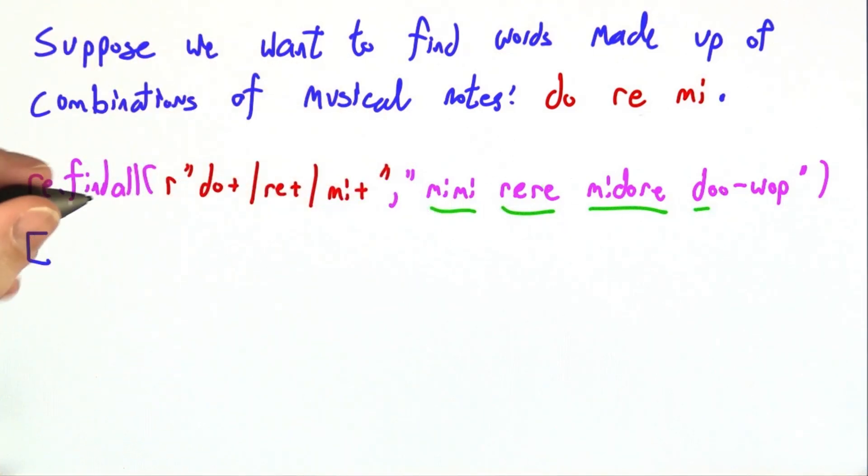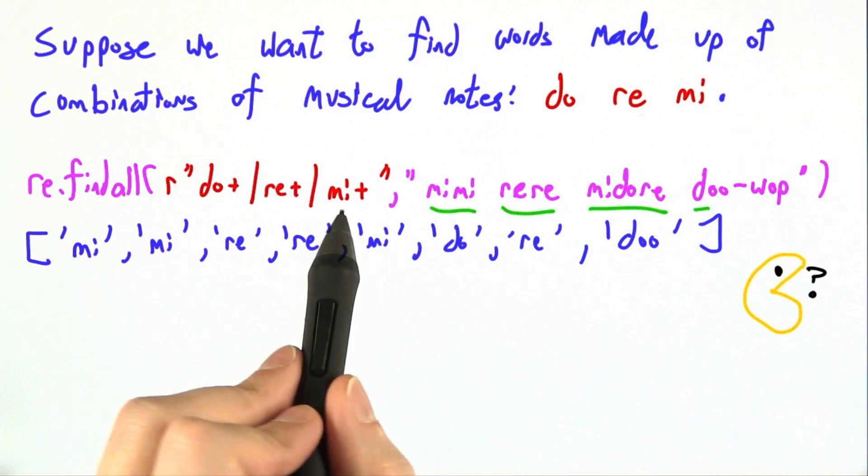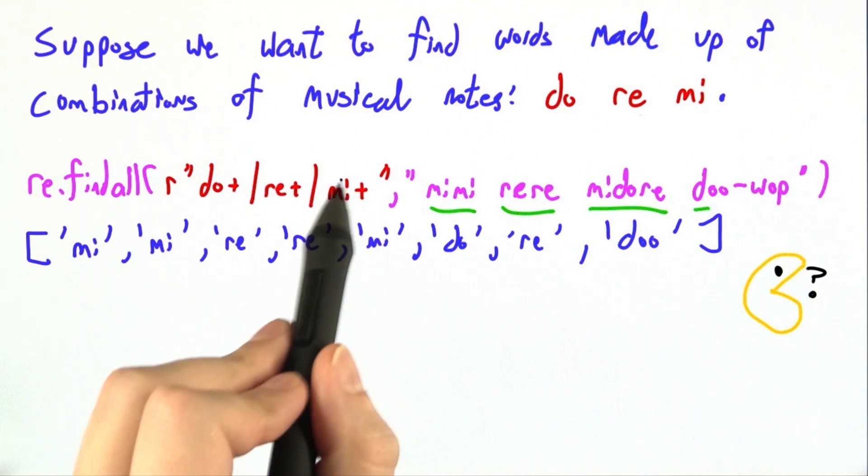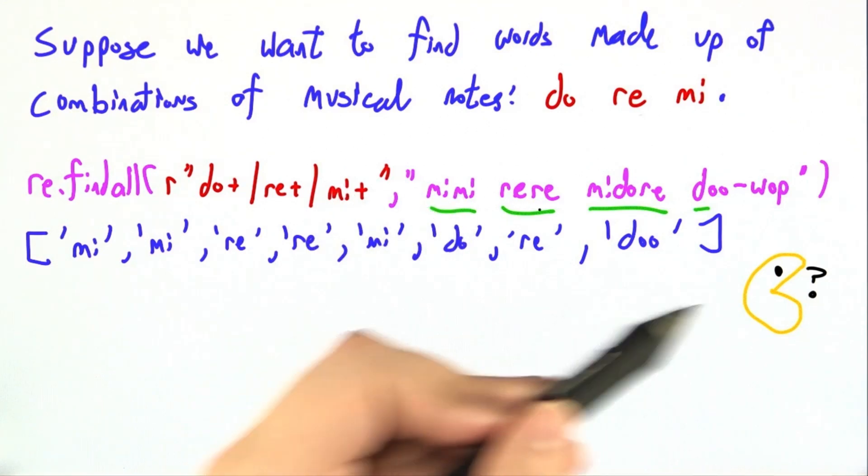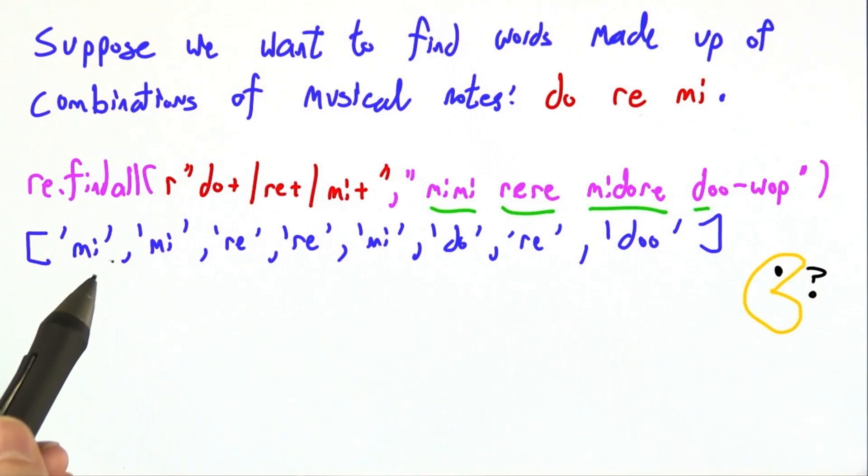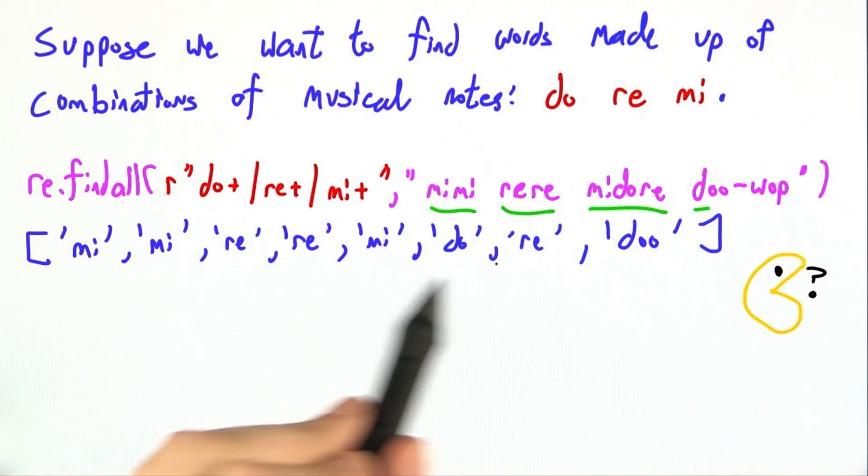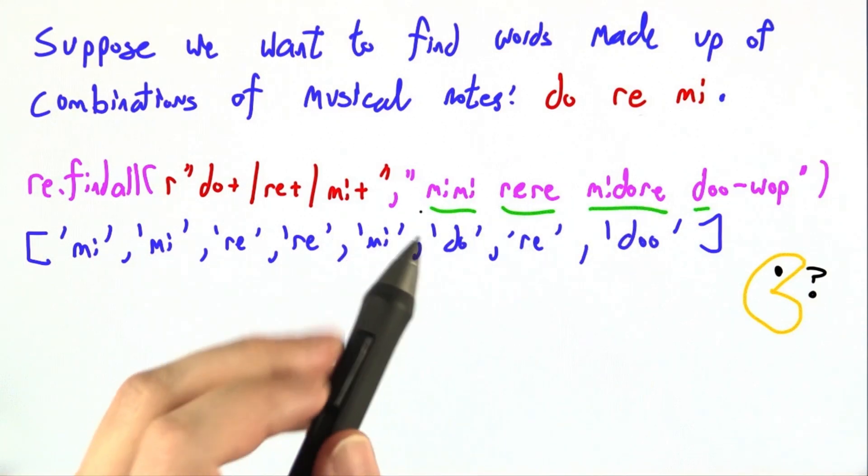But we will be unpleasantly surprised. We would really expect something like mi plus to get mi, mi. Maximal munch rule, why have you betrayed us? If you look over here, you'll see that actually every one of these little musical syllables, mi, mi, re, re, mi, do, re, seem to come out separately. Why?